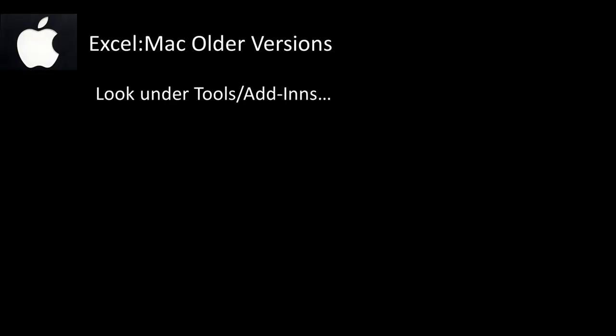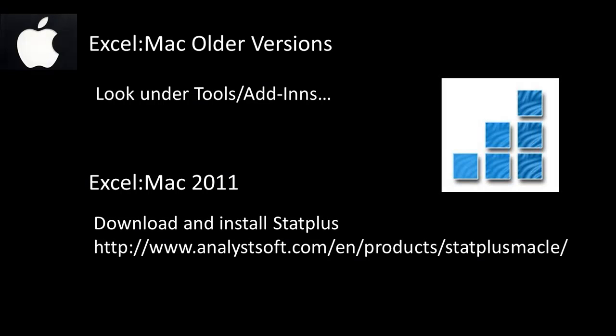For older Excel Mac versions, under Tools > Add-ins you could install the Data Analysis ToolPak. But with Mac 2011 it's been discontinued. There is another product called StatPlus for Mac that does some of what the ToolPak used to do — it's a bit clunky but usable. In this course I'll be showing a lot of things in Excel, but anything we do in Excel we'll also be able to do in R, so I'm just showing you all the options available.